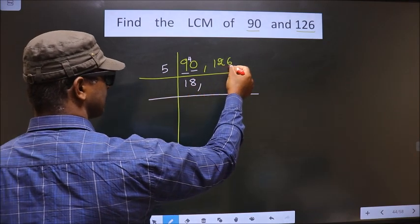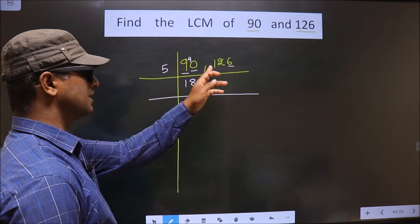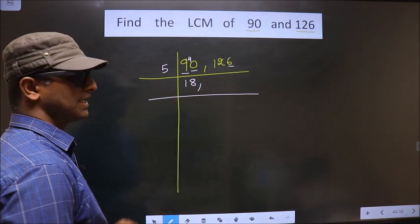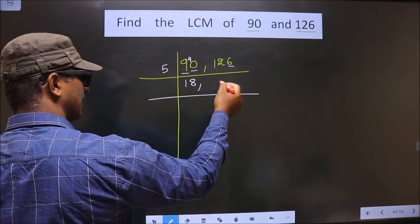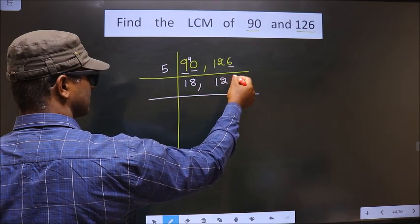Now, for this number, last digit is 6, so this number is not divisible by 5. So, you will write down this number as it is.